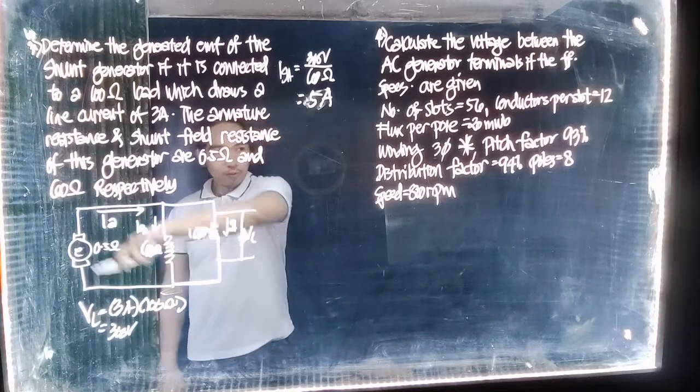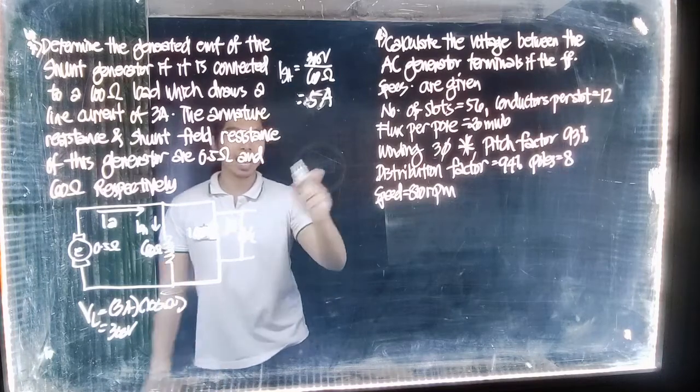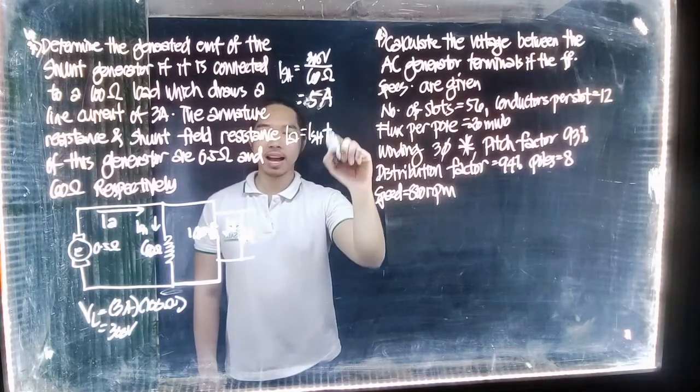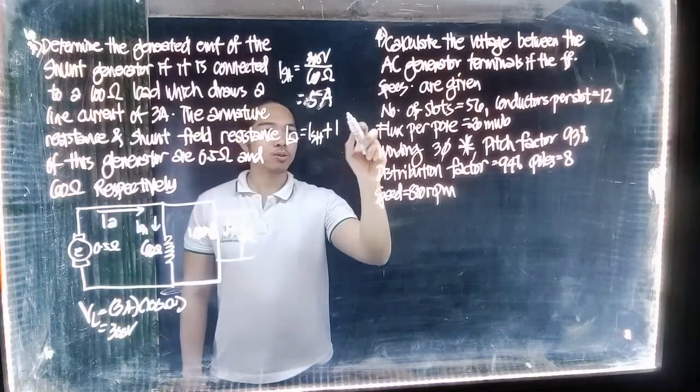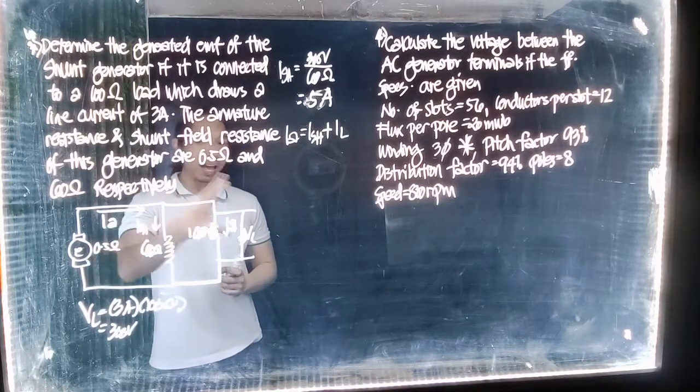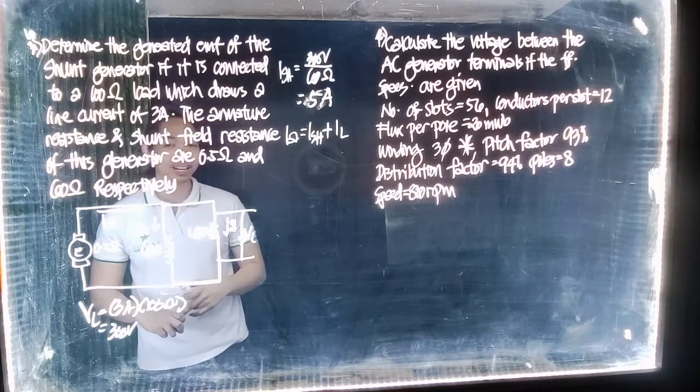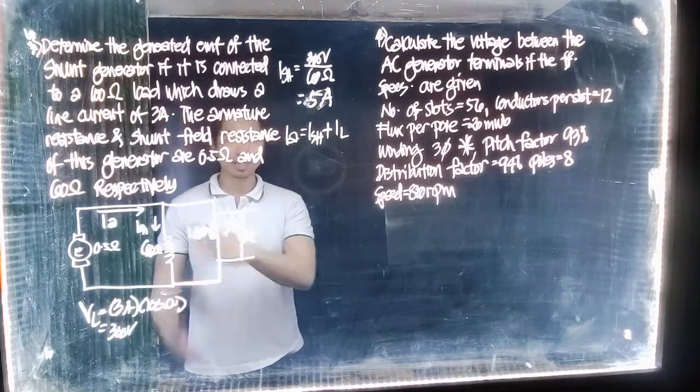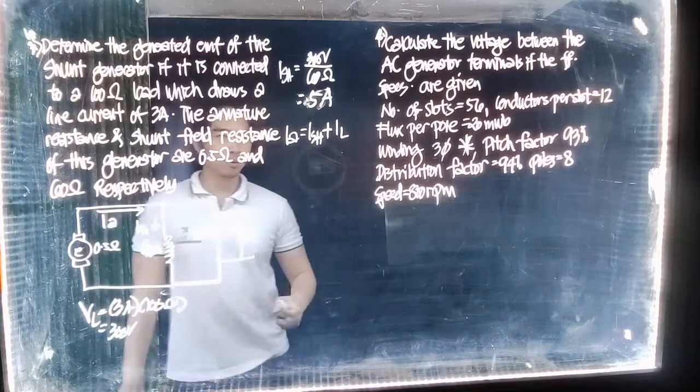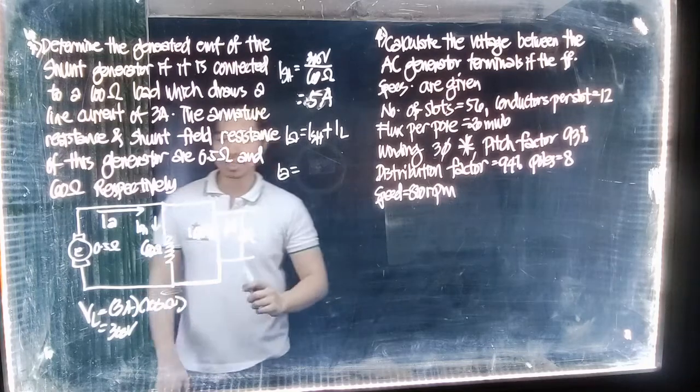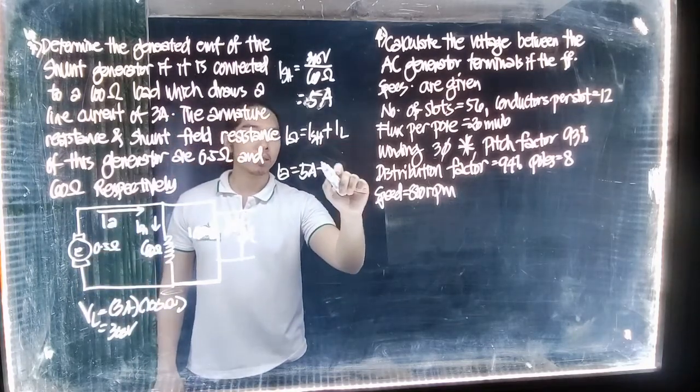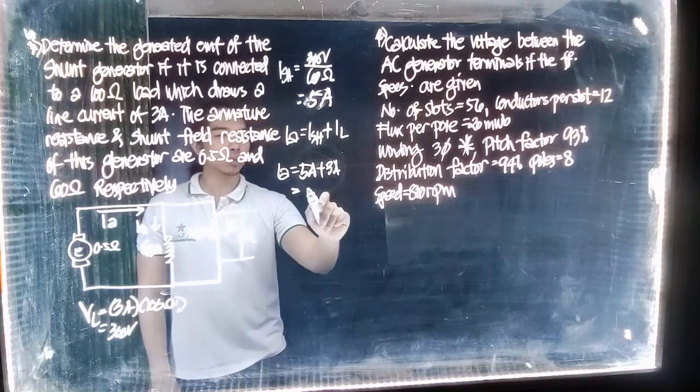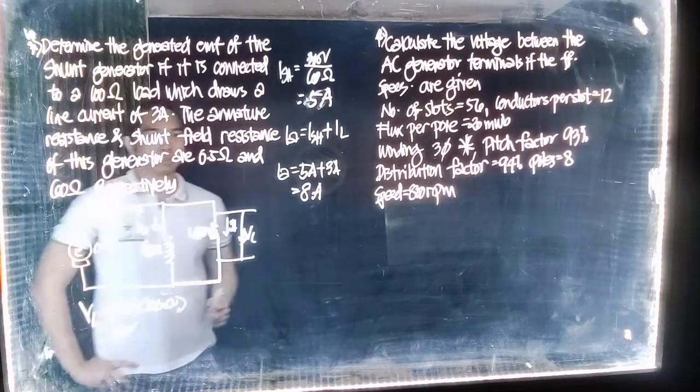We have Ish and we have Ia here. We know that Ia is equal to Ish plus Il, the load current. That is in parallel. Therefore, the current is additive. Ia now is equal to Ish, which is 5 amperes, plus our load current equal to 3 amperes. So Ia is now equal to 8 amperes.